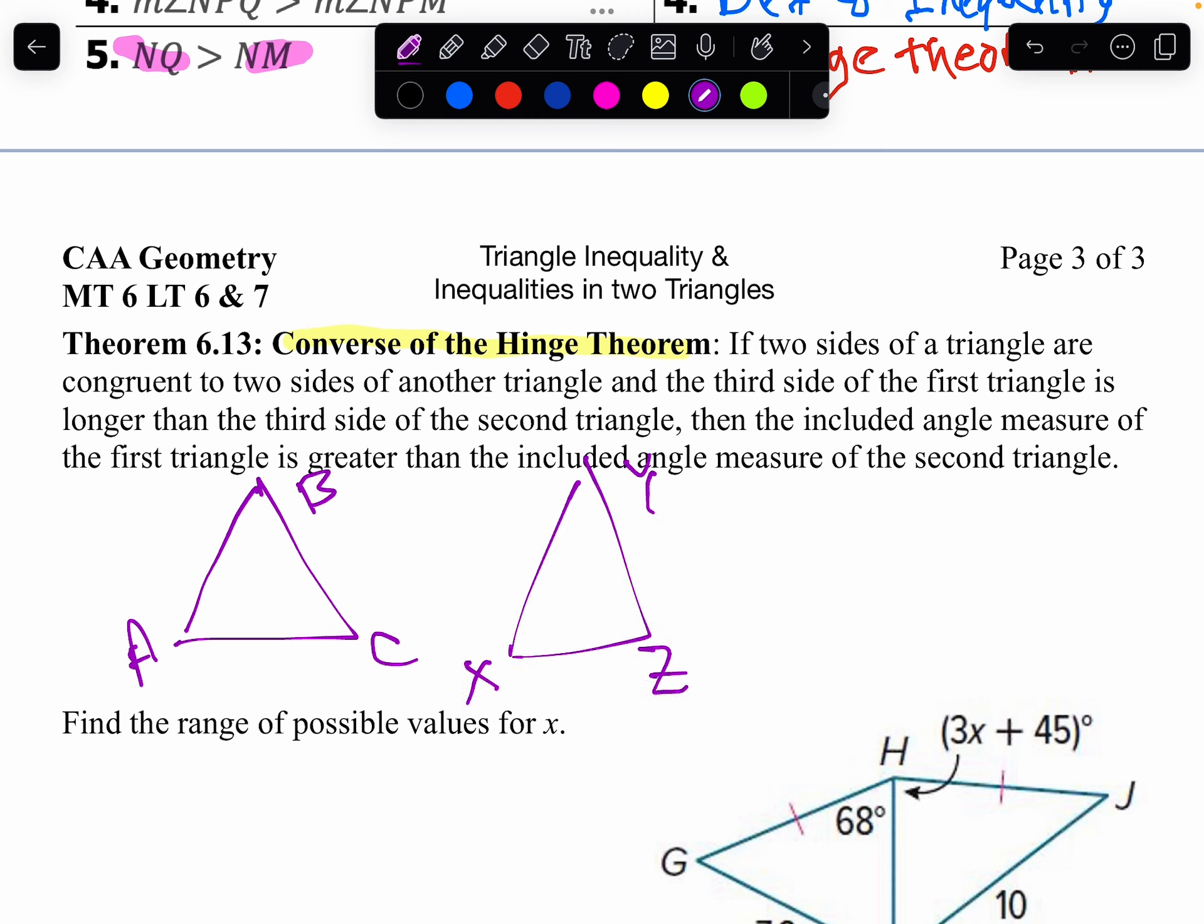And just like the hinge theorem, two of the sides have to be the same. So in other words, I'm going to say AB is congruent to XY, AC is congruent to XZ.